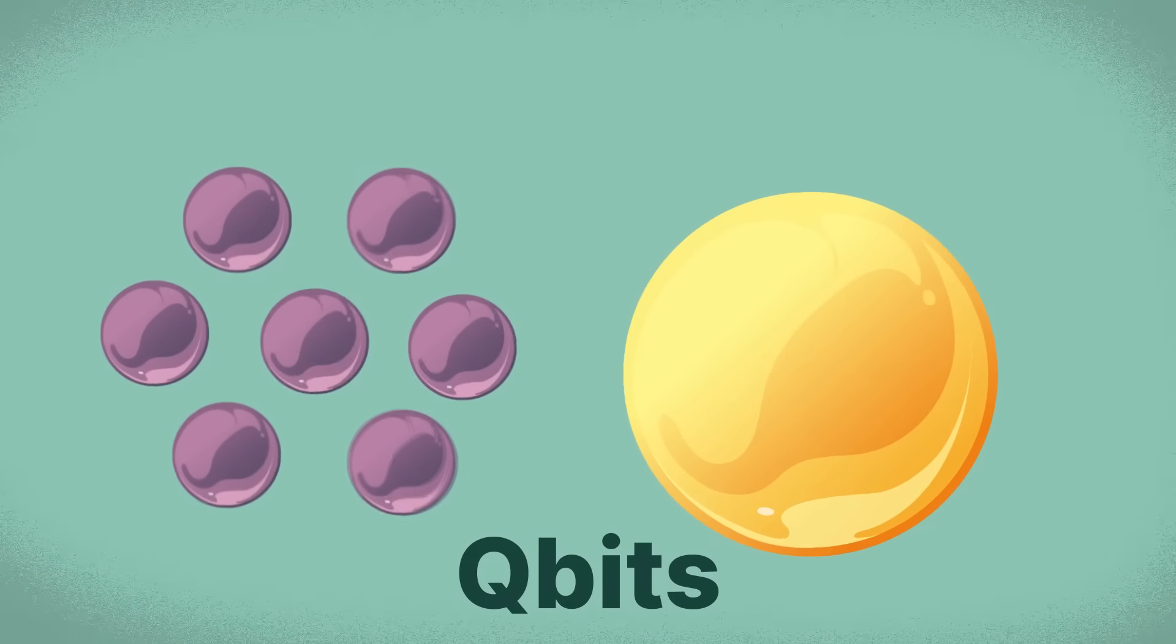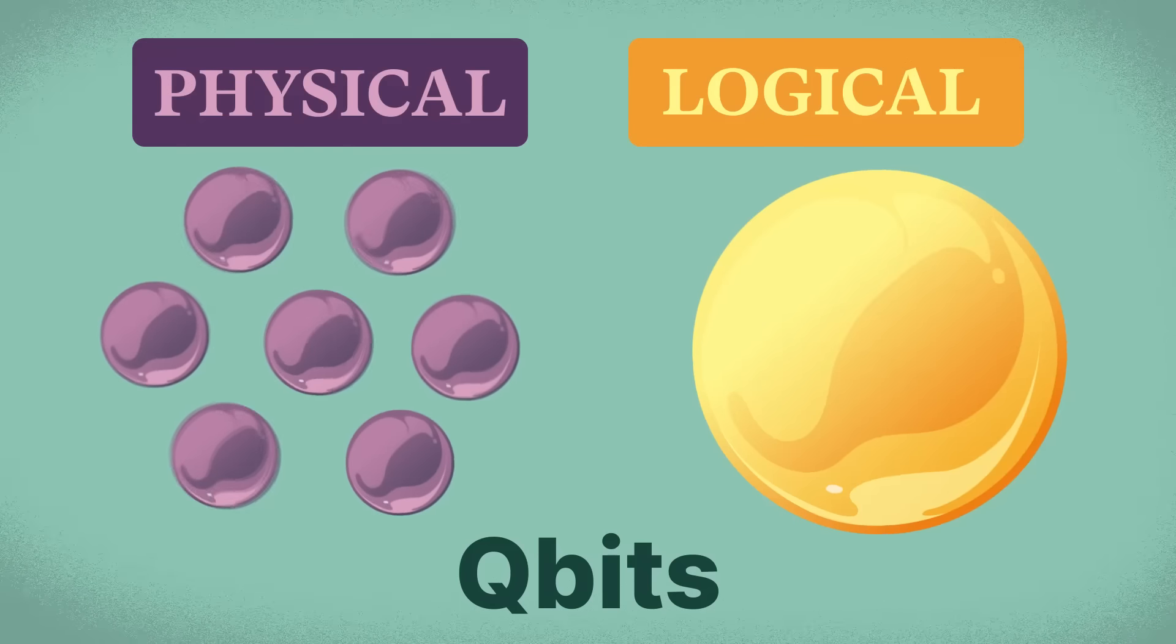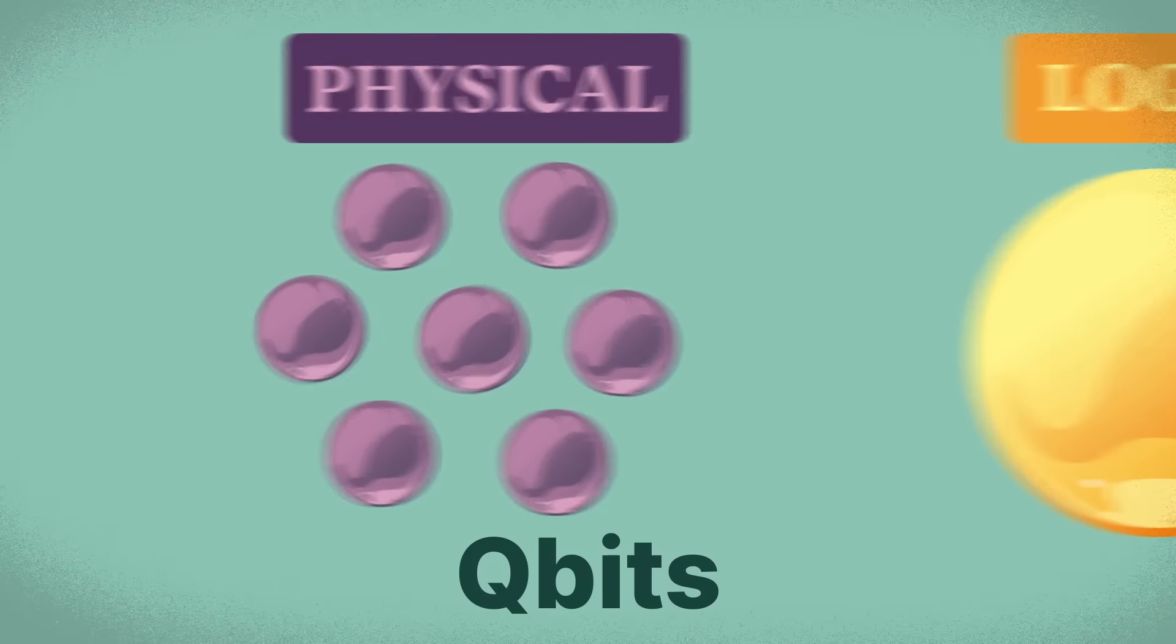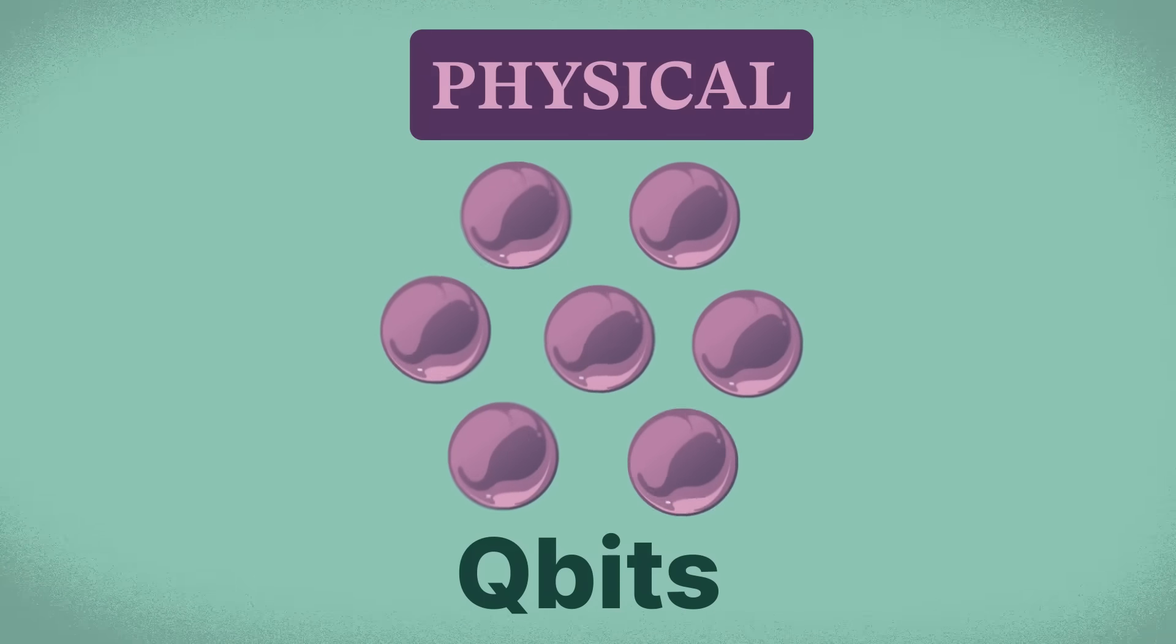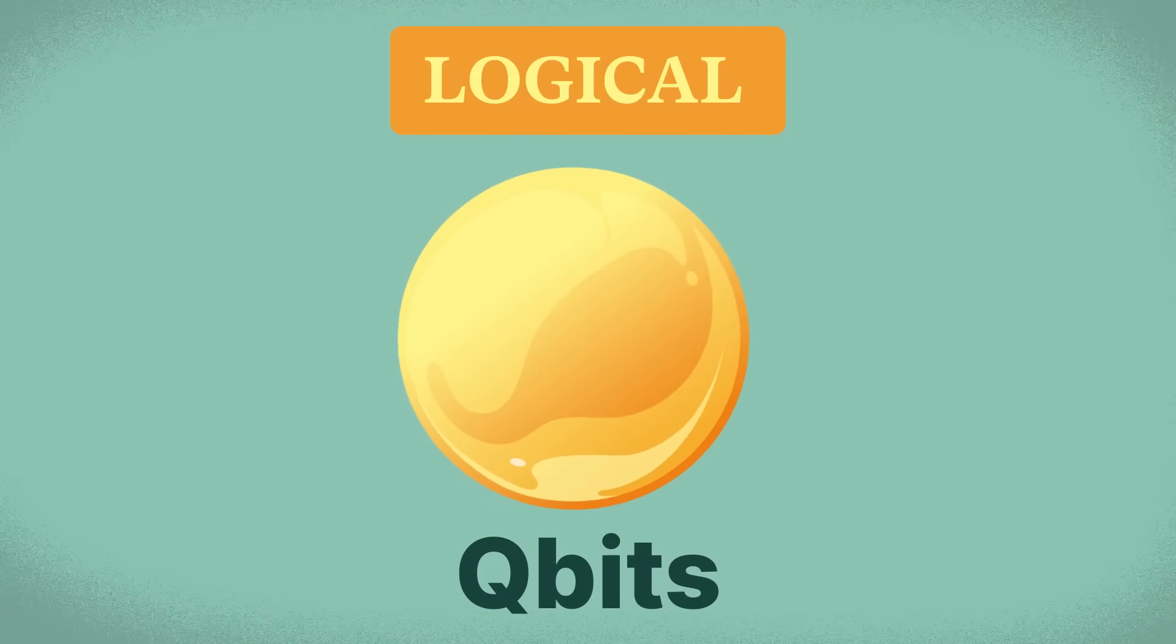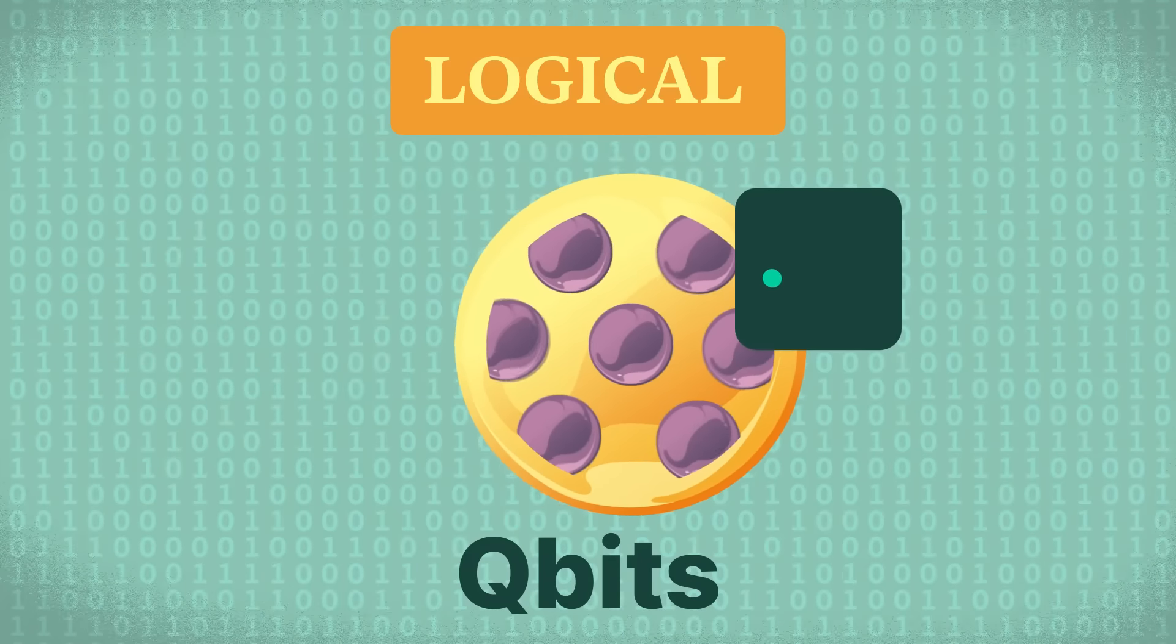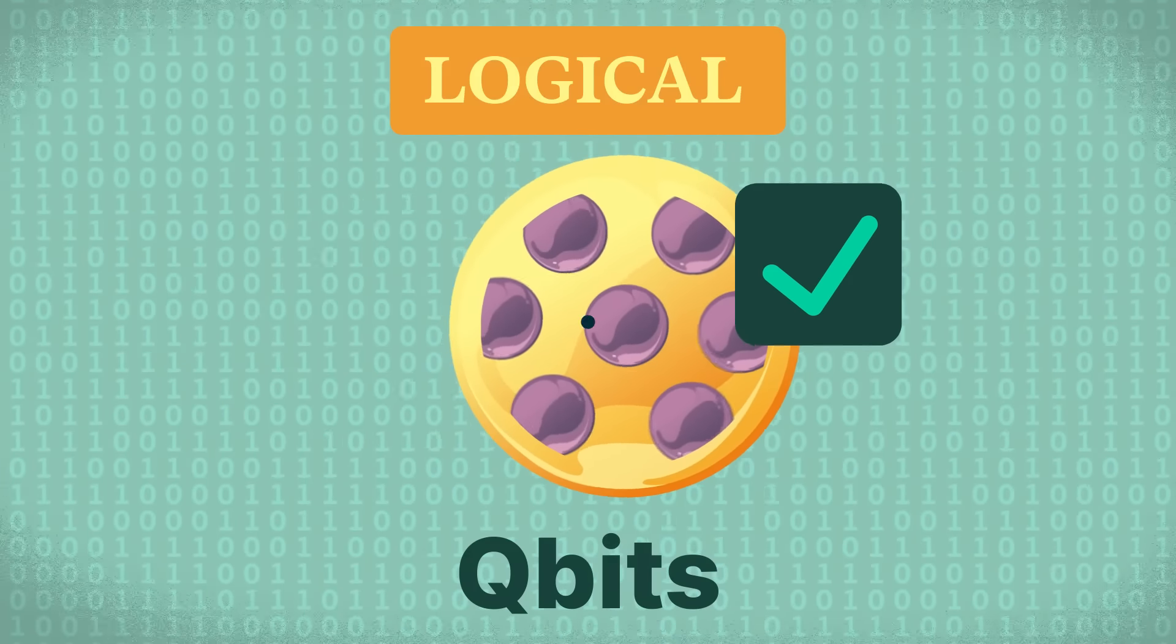Groth underscores a crucial distinction between two types of qubits: physical and logical. Put simply, physical qubits are extremely unstable and tend to introduce errors. To correct the error, logical qubits, each consisting of numerous physical qubits, are implemented to produce reliable computations.